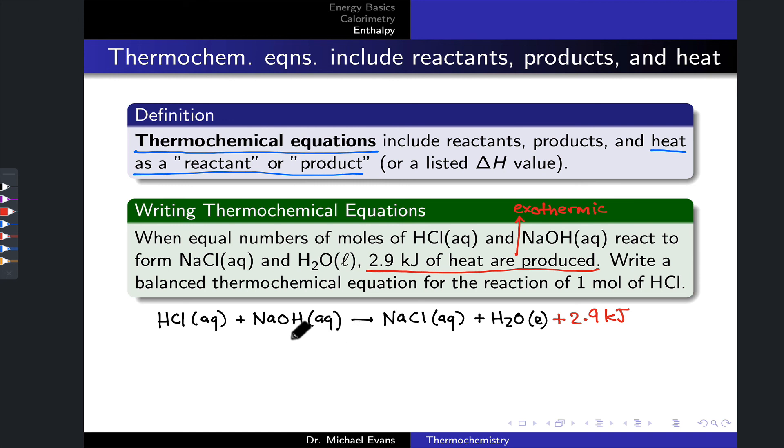heat would appear as a reactant on the left-hand side of the thermochemical equation. We may also see the heat component written as a delta H value, often after a comma or separated from the balanced chemical equation. And here,